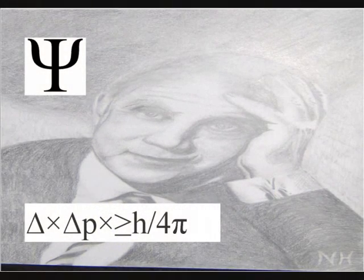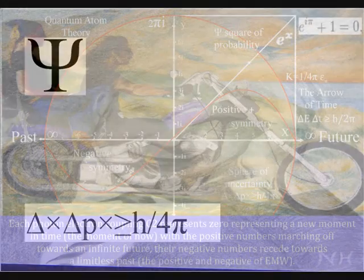The second is that Heisenberg's uncertainty principle, that is formed by the probability function, is the same uncertainty we have with any future event.